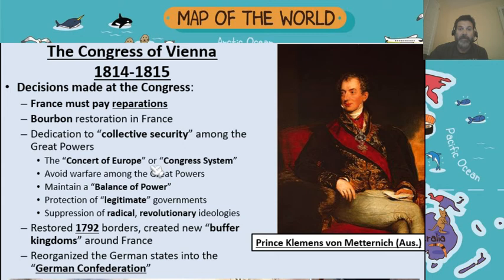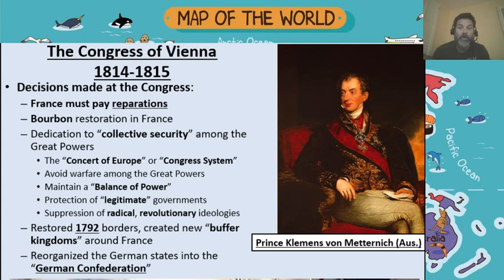Under the Concert of Europe and the Congress system, there were agreements among the five great powers to not go to war against each other, to avoid warfare among the great powers, and to maintain a balance of power. Built into this agreement was the idea that if one of the great powers decided to try and expand or take over another country, the other countries would ally with each other to block that — a guarantee that if one of them got too ambitious, the others would be there to check that power.